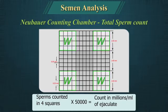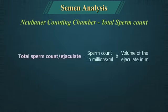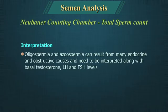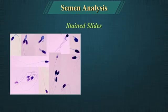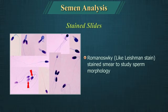Sperms counted in 4 squares multiplied by 50,000 gives the count in millions per ml of ejaculate. Therefore, the total sperm count equals the count per ml multiplied by the total volume of ejaculate in millilitres. Oligospermia and azoospermia can result from many endocrine and obstructive causes and need to be interpreted along with basal testosterone, luteinizing hormone and follicle stimulating hormone levels.